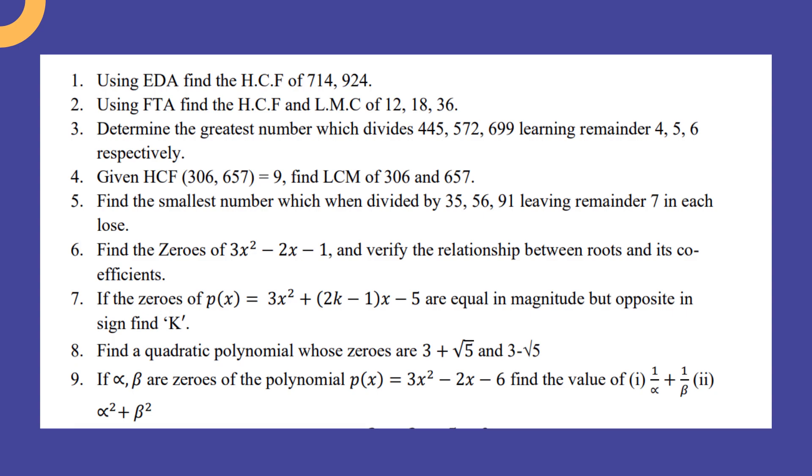If α and β are zeros of the polynomial p(x) = 3x² - 2x - 6, find the value of 1/α + 1/β and α² + β².